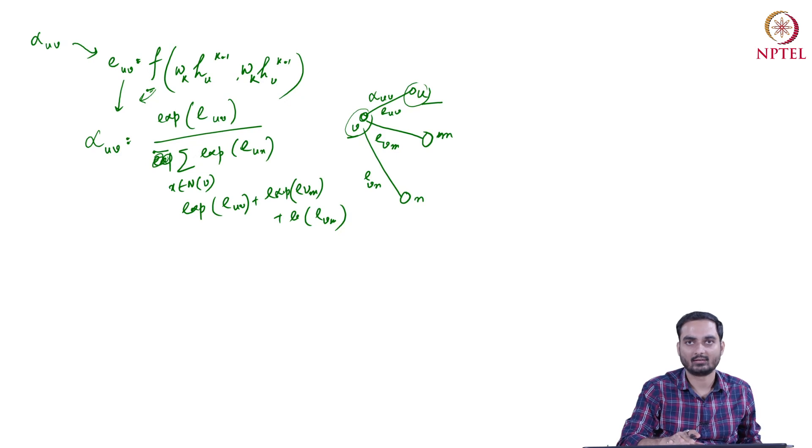Now, when you pass it through softmax, it always guarantees that it ranges between 0 to 1. And this is your alpha.